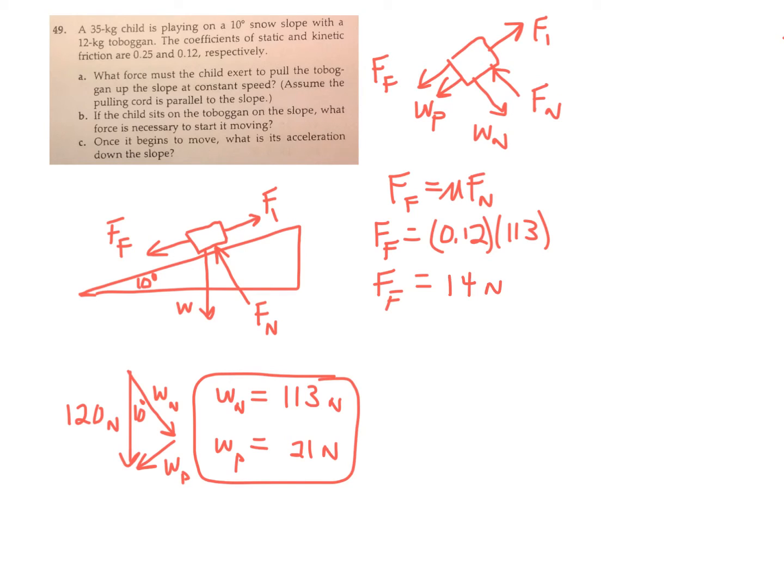All right. So once again, there's an F net of zero. So up the ramp, F sub 1. F sub 1 has to equal the sum of the force of friction, F sub F, plus the parallel component of weight that's trying to bring the toboggan down the ramp. So it's a simple addition problem.